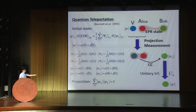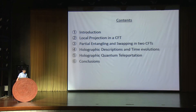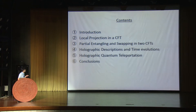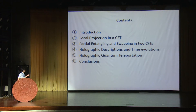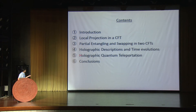The content of my talk: we first introduce how to do local projection in conformal field theory. Next we describe the quantum operation which creates local entanglement and the swapping procedure. Then we discuss the holographic description and compute time evolutions of entanglement entropy. Finally, by combining these procedures, we consider an analog of quantum teleportation in CFT and its holographic duals.